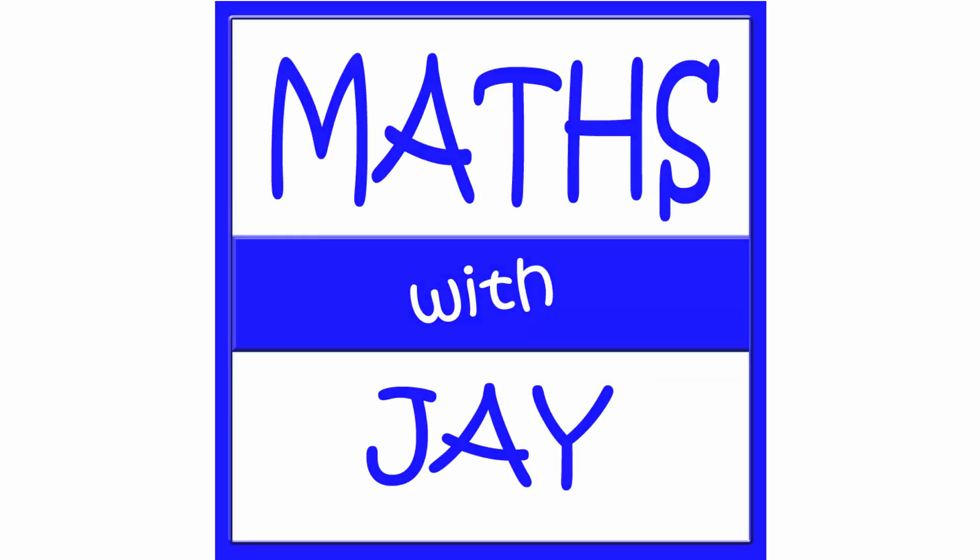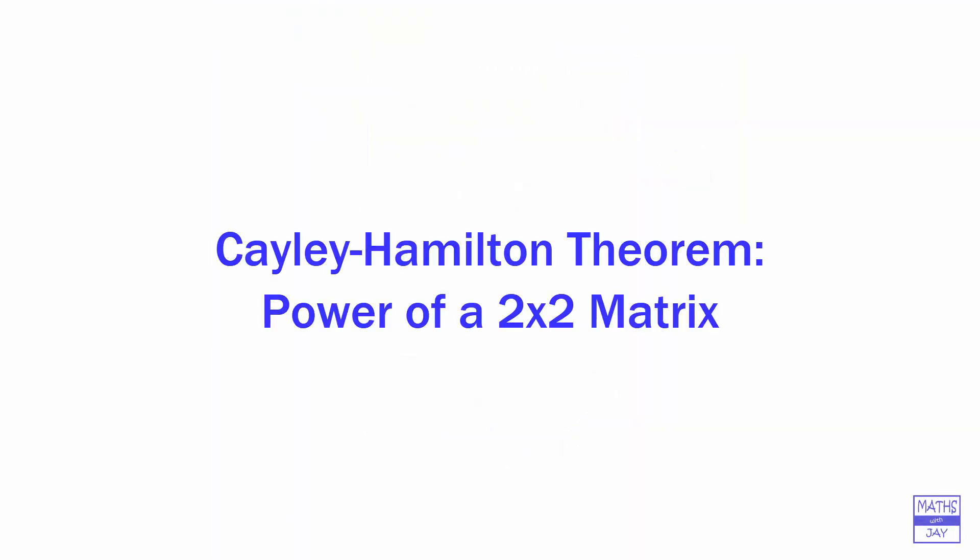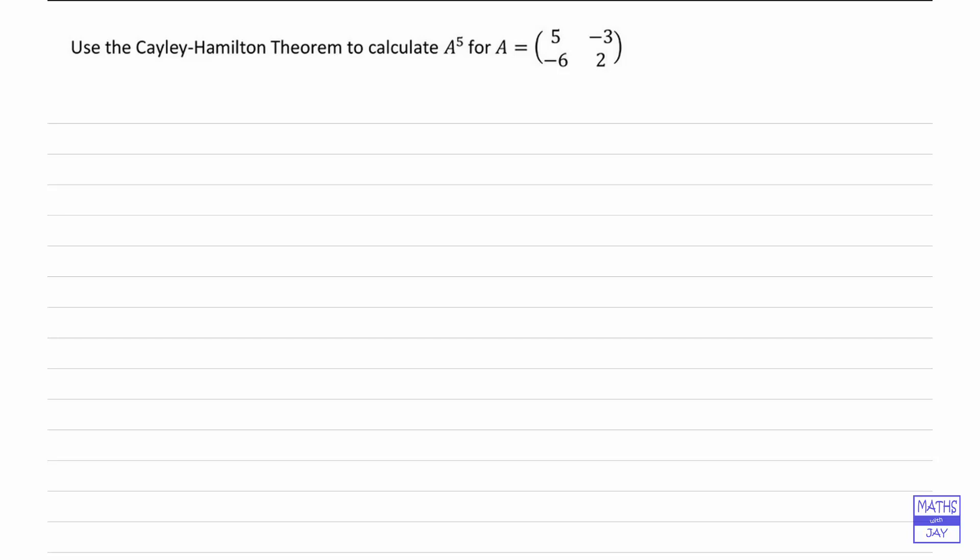Hello, welcome to Maths with Jay. So we want to find A to the power of 5 for this 2 by 2 matrix A. And because we want to use the Cayley-Hamilton theorem, let's remind ourselves of the characteristic equation for this matrix, which would find the eigenvalues for us.